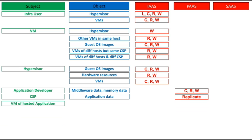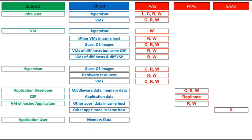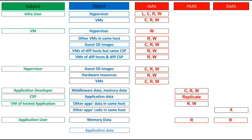The virtual machine hosting an application can perform read and write operations on other application data on the same physical host. The VM of the hosted application can also execute other application code on the same host. The application user can read the memory data related to their application in both PaaS and SaaS models.